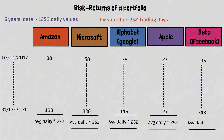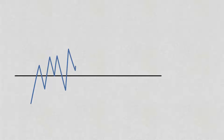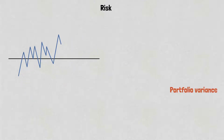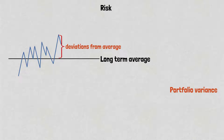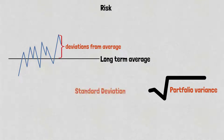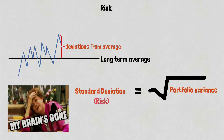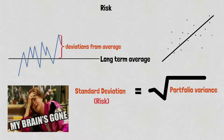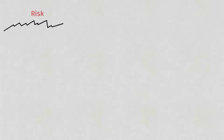When it comes to calculating the portfolio risk, things are a bit more complicated. The standard assumption is that risk is measured as how often the returns fluctuate and by how much — it's also known as the portfolio variance. It seeks to measure how much the returns deviate from the long-term average we just calculated. The square root of the variance is what is called the standard deviation, and represents the risk. One important thing to understand is that the portfolio variance accounts for the correlation between the different stocks in the portfolio.